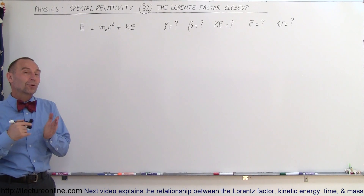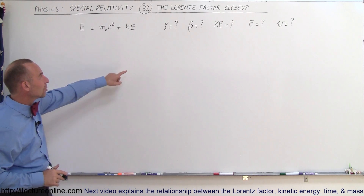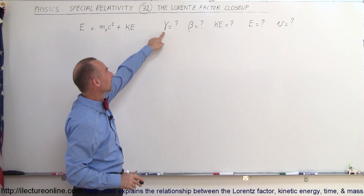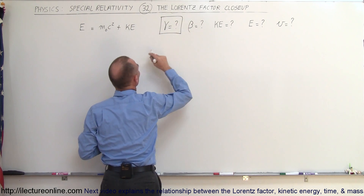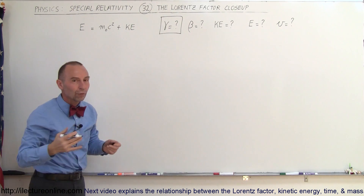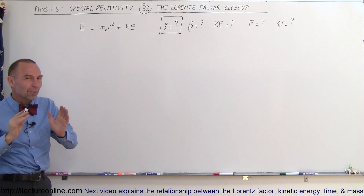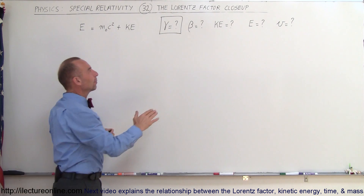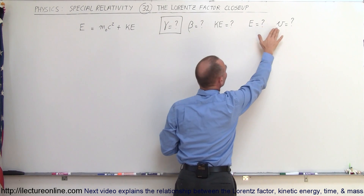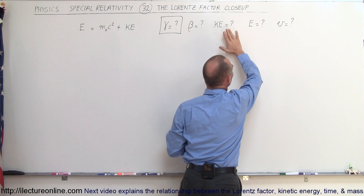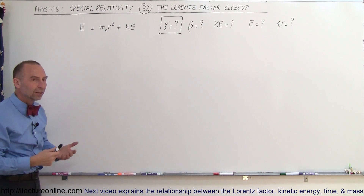Welcome to ElectronLine. In this video, we're going to take a closer look at what we call the Lorentz Factor, represented by the Greek letter gamma. If you've seen the previous videos, you probably already know. But let's summarize. We want to come up with expressions for beta, the kinetic energy, the total energy, and the velocity — all three in terms of gamma. Gamma is an important constant in relativity.